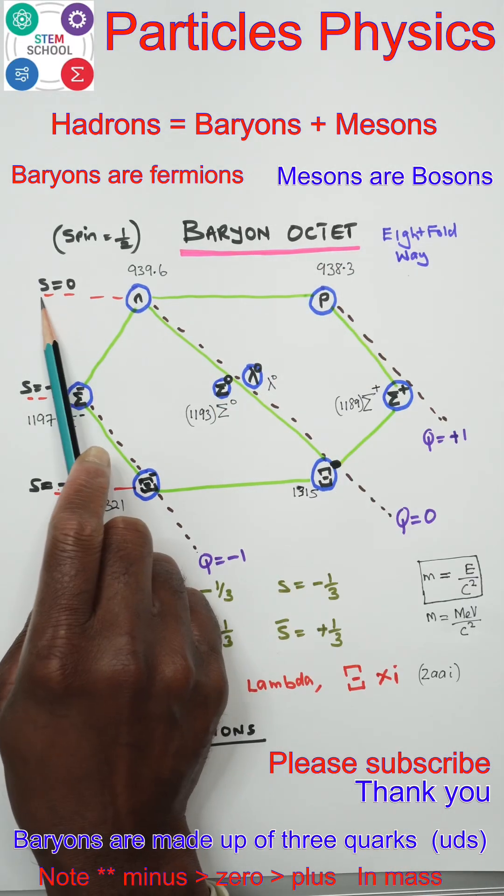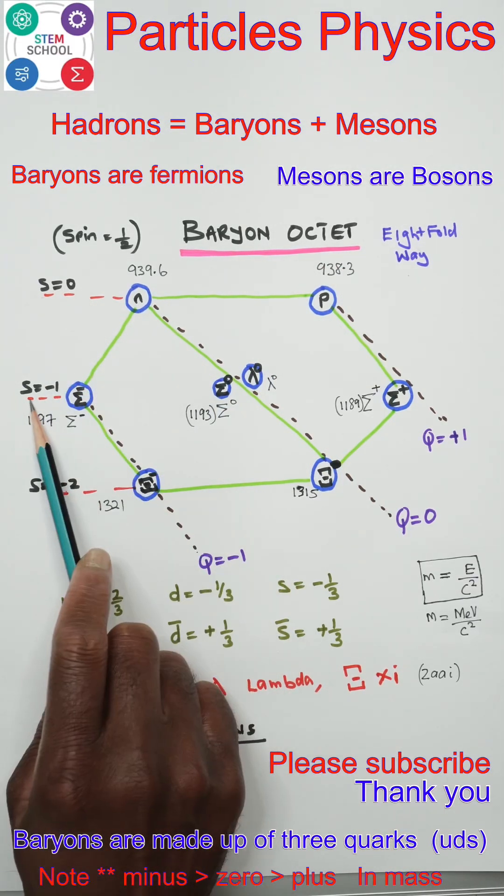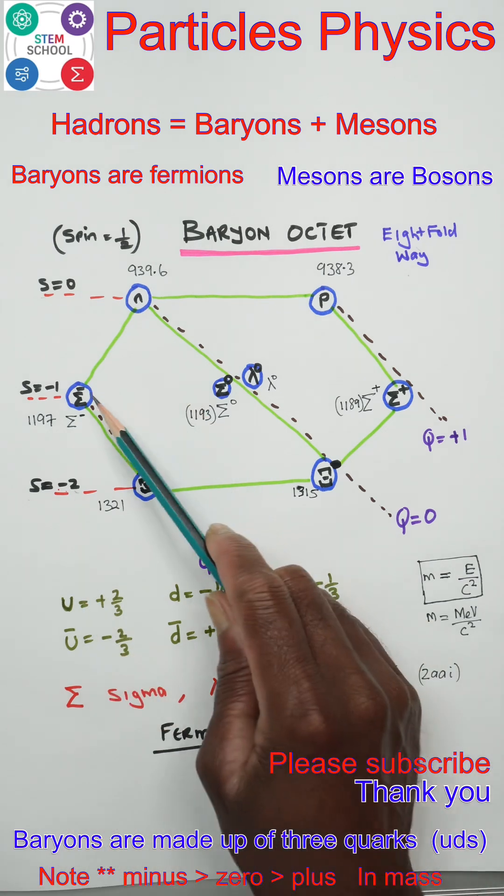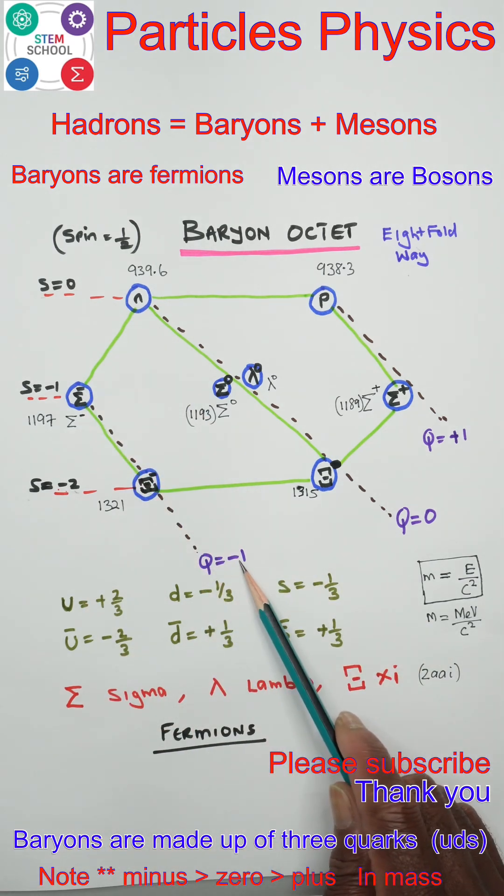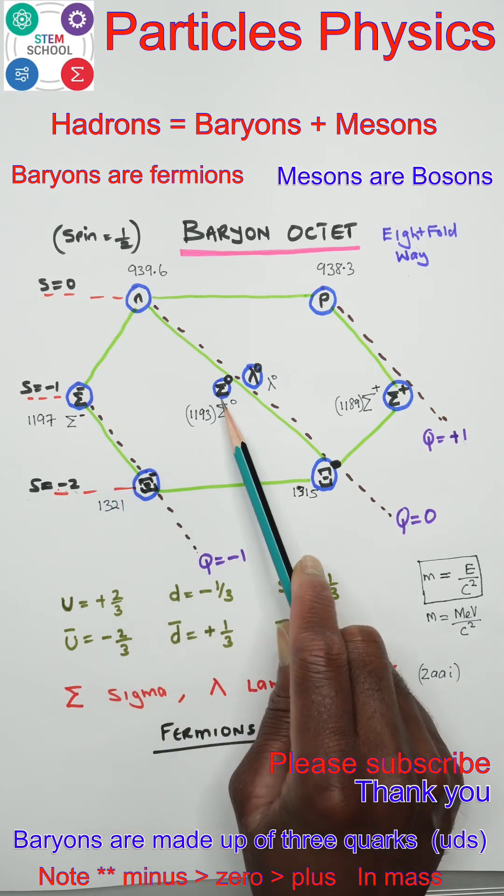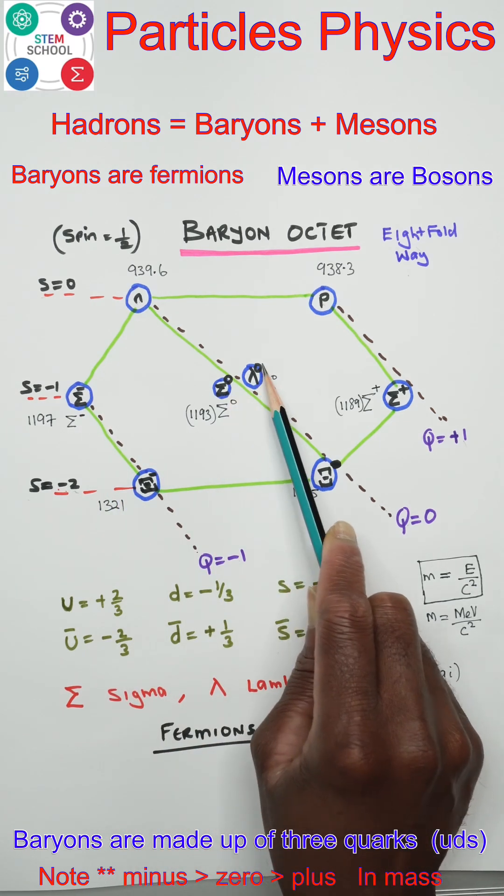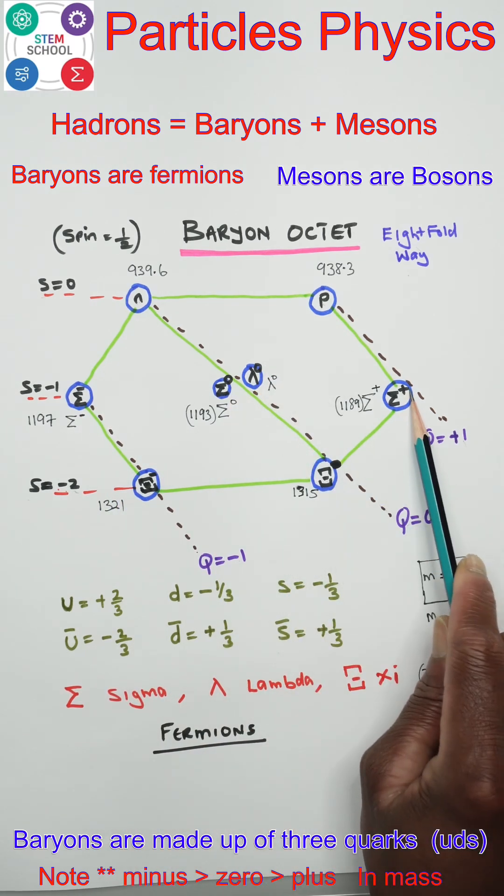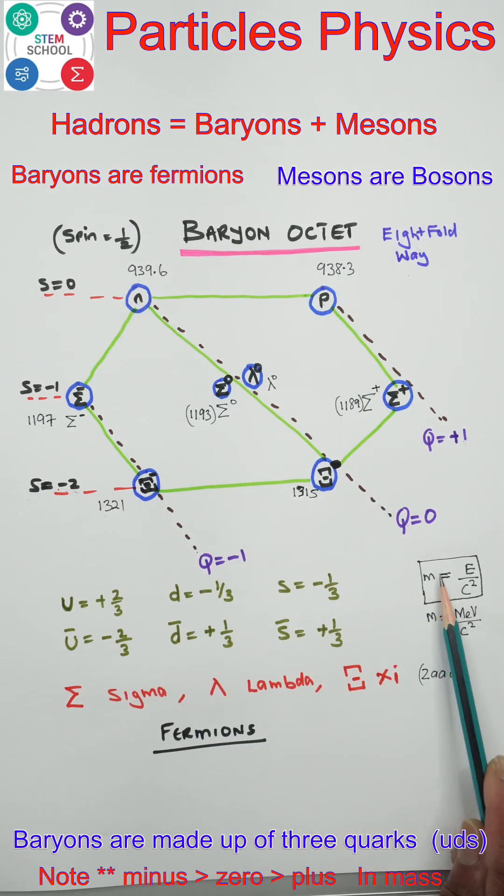Baryon octet: strangeness of zero, minus one, minus two. These are the charges: Q equals minus one, zero, plus one. Neutron, proton, sigma minus, sigma zero, lambda zero, and sigma plus. These are their masses. Mass is measured